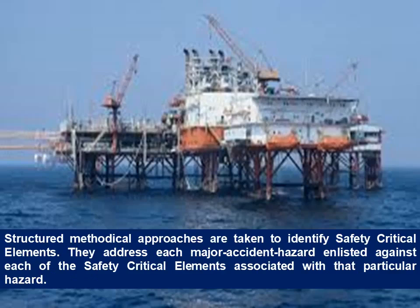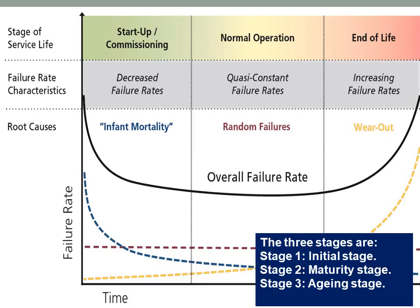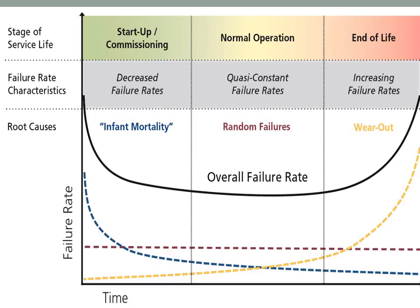Structured methodical approaches are taken to identify safety critical elements, addressing each major accident hazard against each of the safety critical elements associated with that particular hazard. Aging of assets is conceptually represented using the bathtub curve. The shape of the curve reflects the rate of degradation and the effect of accumulated damage on operating margins. The three stages are: Stage 1, initial stage; Stage 2, maturity stage; Stage 3, aging stage. Each stage requires a different approach to inspection, testing, maintenance, and modifications. The picture shows a typical bathtub curve.